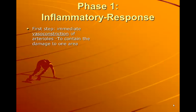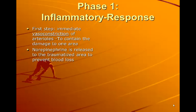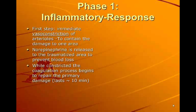The first step is immediate vasoconstriction of the arterioles right around the injured site. This is to contain the damage to one area and gives the body and the brain an idea of where the injury occurred. Norepinephrine is released to the traumatized area to prevent blood loss. While constricted, the coagulation process begins to repair the primary damage. This lasts for about 10 minutes.